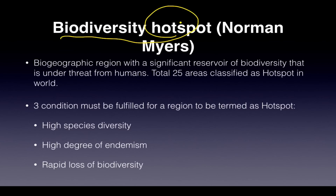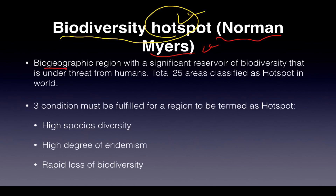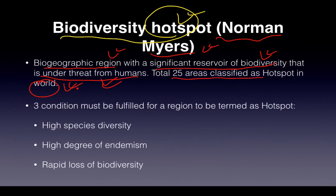A biodiversity hotspot is a term given by Norman Myers. It refers to a biogeographic region that has a significant reservoir of biodiversity and is under threat from humans. A total of 25 areas are classified as hotspots in the world. Three conditions must be satisfied: first, high species diversity; second, high degree of endemism — meaning species found only in that area and nowhere else in the world; and third, there must be a rapid loss of biodiversity.